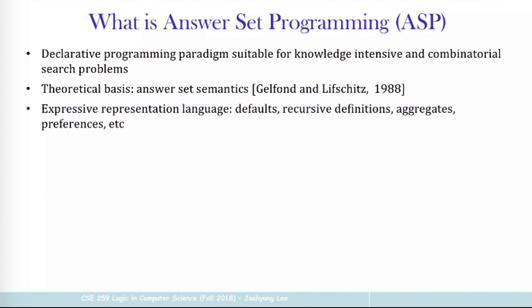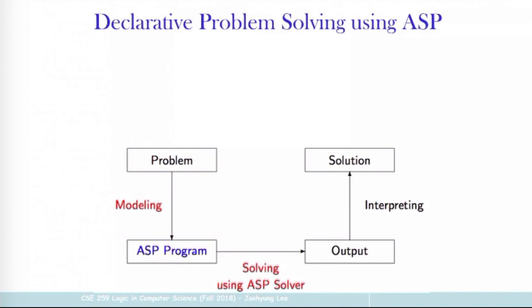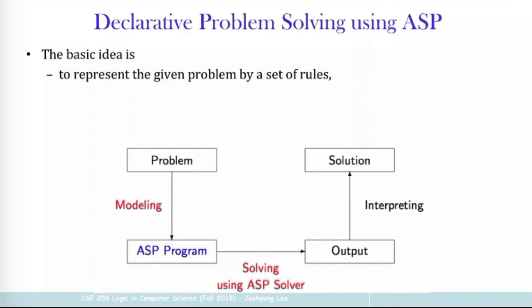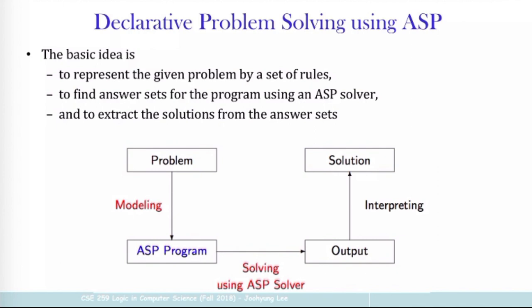One method in declarative programming is called answer set programming, and this has a very rich history. For this class we will just look at some initial basics of this programming method. Its theoretical basis is called answer set semantics, also known as stable model semantics, which is slightly tweaked from propositional logic. It has very rich language constructs: default, recursive definitions, aggregates, and preference, which we are going to learn later.